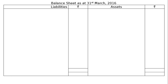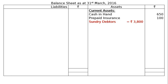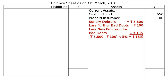Next is the balance sheet of A as at 31st March 2016. Starting from the asset side — current assets: cash in hand rupees 650, prepaid insurance rupees 100 (an adjustment). Debtors rupees 3,800 less further bad debts rupees 100 leaves rupees 3,700, then less new provision for bad debts rupees 185, giving a final column figure of rupees 3,515. Closing stock rupees 3,250.